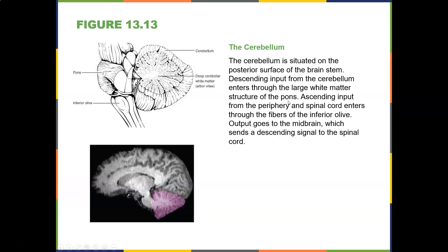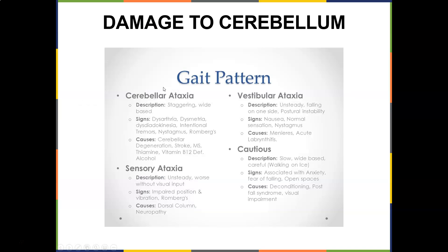Descending input into the cerebellum enters the large white matter structure of the pons. Ascending input from the periphery and spinal cord enters through the fibers of the inferior olive. Output goes to the midbrain, which sends a descending signal to the spinal cord. So the cerebellum is very important for balance and coordination.